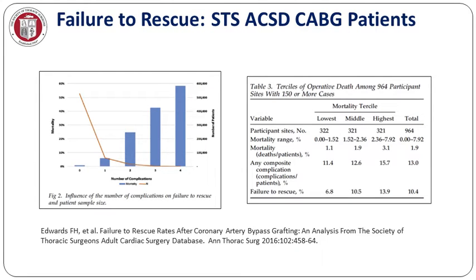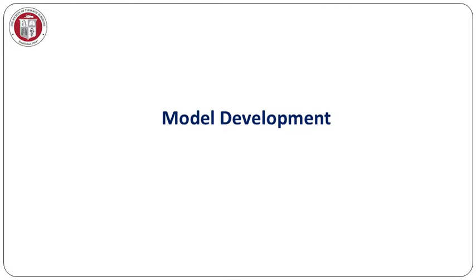The findings of this study were remarkable in two regards. First of all, mortality increased dramatically with the number of complications, as you can see in the graph on the left. As many in the field have found in other scenarios, as mortality increased, failure to rescue increased more dramatically than complications. As you can see in the graph on the right, complications when broken into tertiles increased from 11.4 to 12.6 to 15.7% of patients, but failure to rescue nearly doubled across the same spectrum.